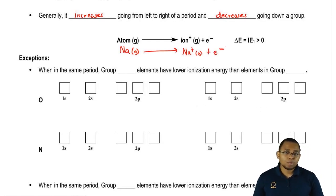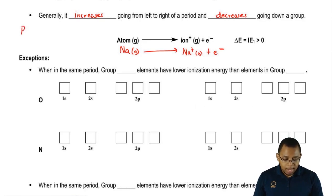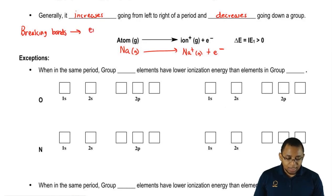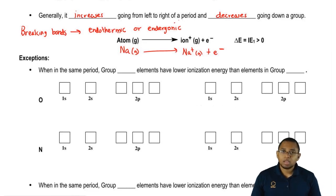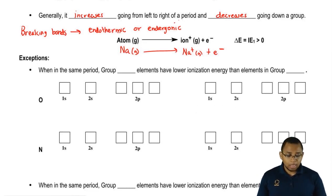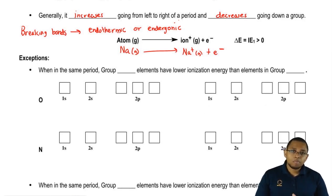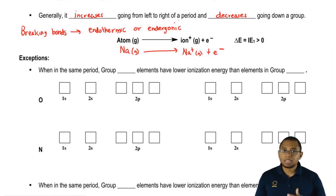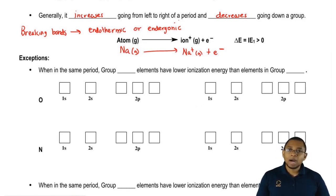Remember, what are you doing? You're technically breaking a bond — you're removing an electron, so you're breaking a bond. Breaking bonds is basically an endothermic reaction, or endergonic since we're dealing with energy. Whether you describe it as endothermic or endergonic, both are saying the same thing: we're breaking bonds. When we're breaking bonds, the energy is going to be above zero. That means our change in energy will be above zero.